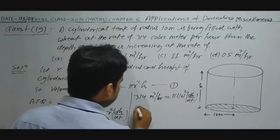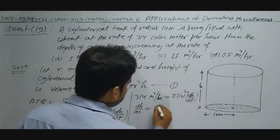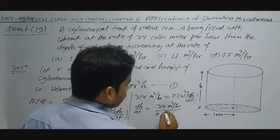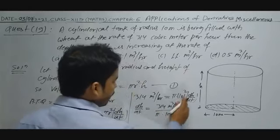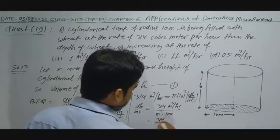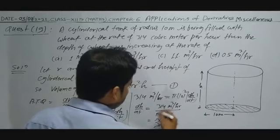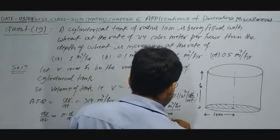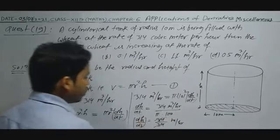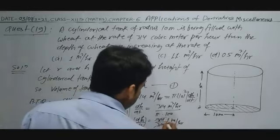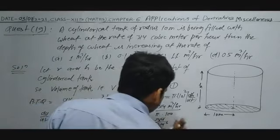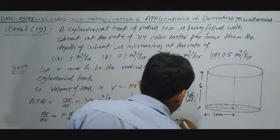Solving for dh/dt: dh/dt = 314 / (π × 100) = 314 / (3.14 × 100) = 314/314 = 1 meter per hour. The depth of water is increasing at the rate of 1 meter per hour.